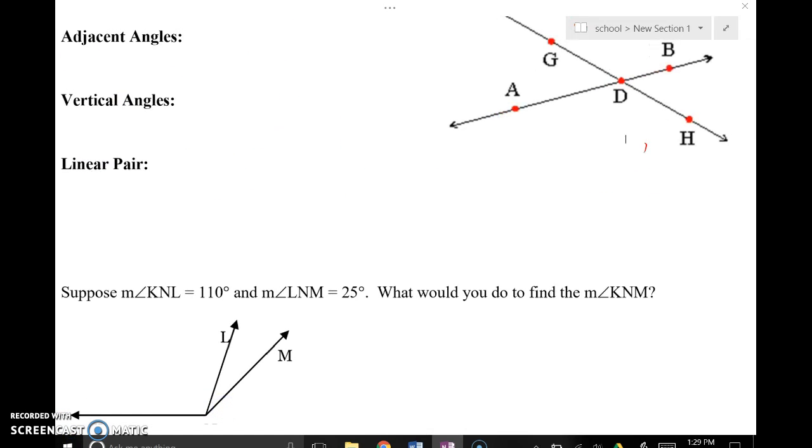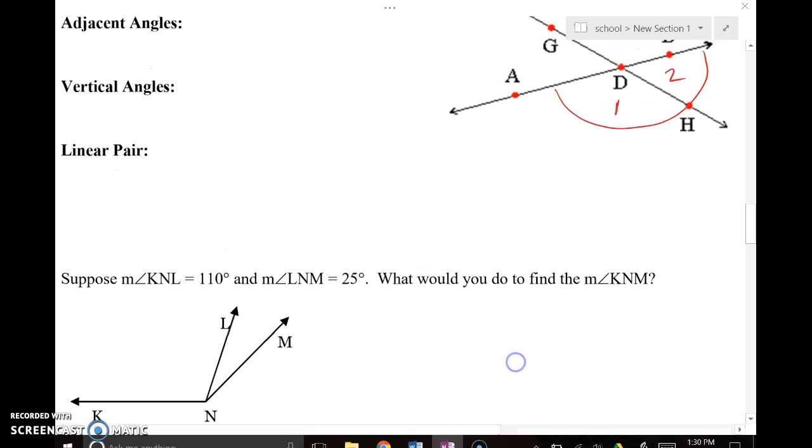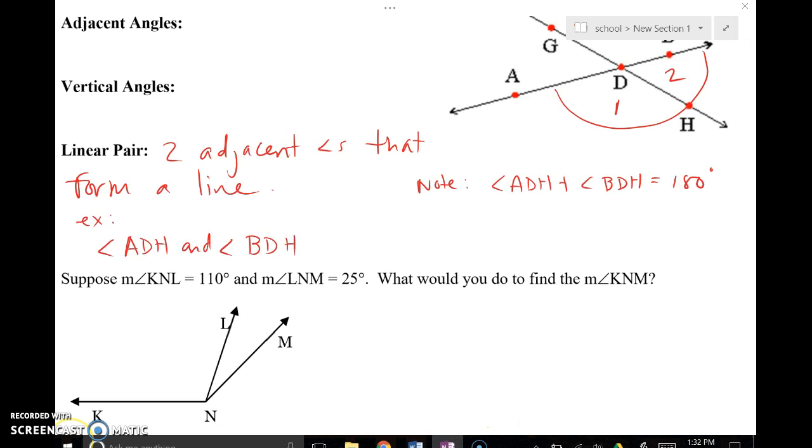Our last concept with angles is this idea of linear pair. Linear has to do with lines and pair is two. So that's literally two angles that form a line. So something like angle ADH, we'll call that angle 1, and angle BDH, we'll call that angle 2. Well, angle 1 and angle 2, if you added those together, you would get that big angle there or this straight angle, which is a line. So a linear pair are two angles that are adjacent, side by side, share a side, and form a line. Use your screen to write down the definition and label your picture. Please go right ahead.